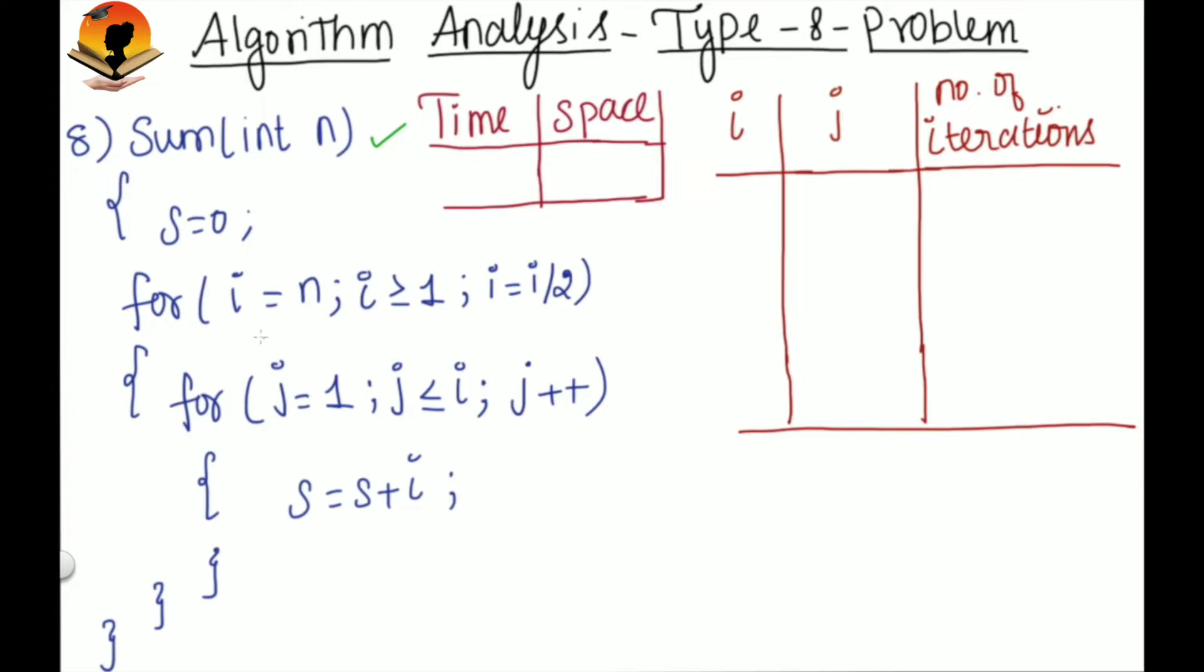Now in this problem, for the outer loop, i starts from n and then it will be divided by 2 till i is greater than or equal to 1. And for the inner loop, j starts from 1 and then it will be incremented by 1 till j is less than or equal to i.